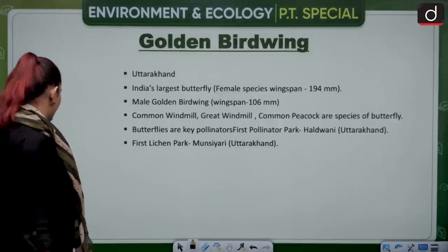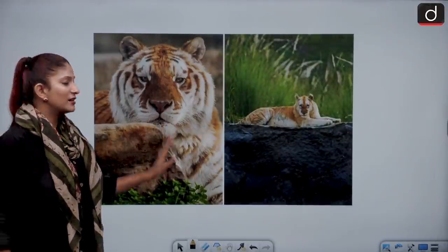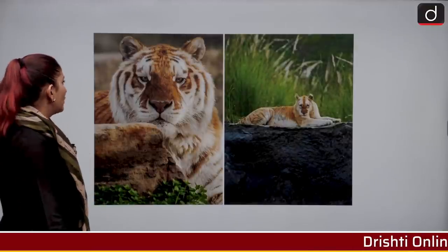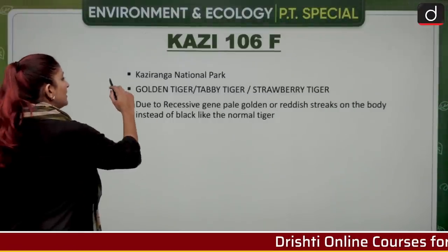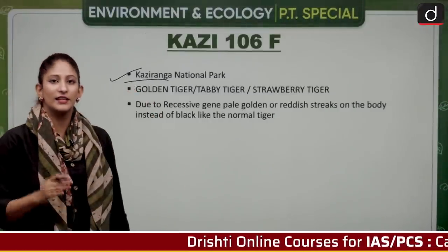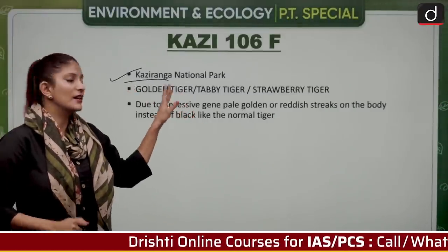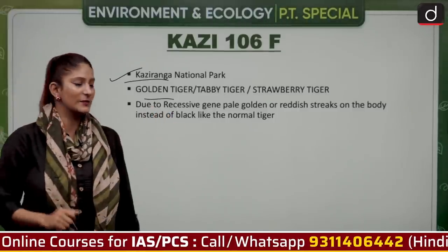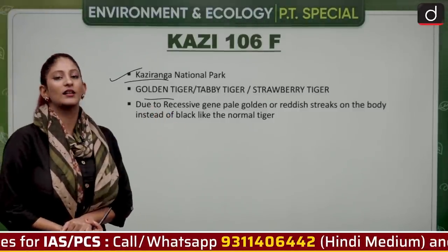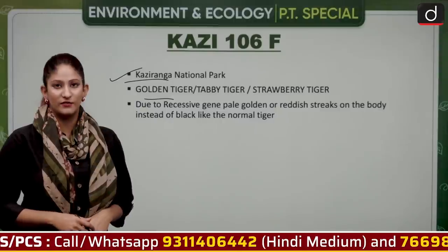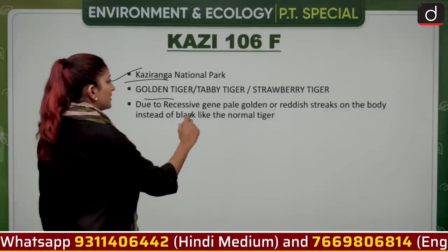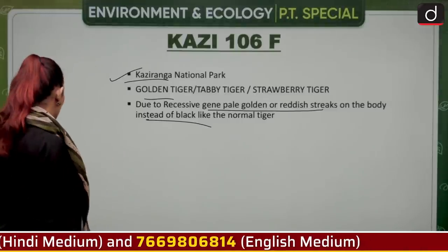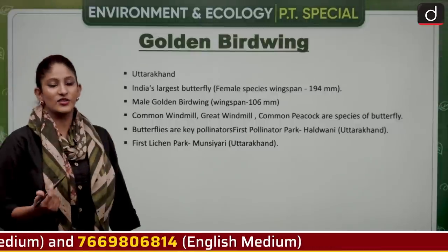This is a tiger also known as the golden tiger or tabby tiger, inhabited in Kaziranga National Park. Golden tiger, tabby tiger, or strawberry tiger are certain names for it. Due to a recessive gene, when two tigers carrying the recessive gene are bred together, we find pale golden or reddish streaks on the body instead of the conventional black streaks of general tigers.